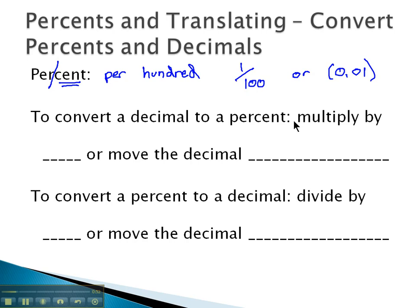To convert a decimal to a percent, what we have to do is multiply by 0.01, or that decimal that represents per hundred, which essentially moves the decimal twice to the right. And that changes the decimal to a percent.